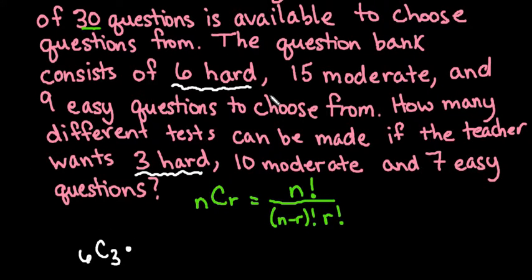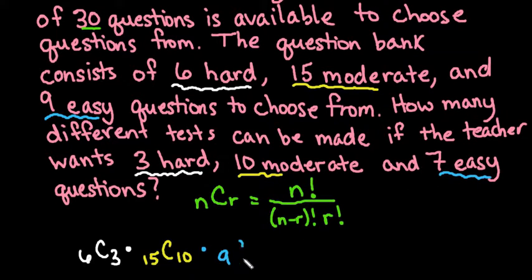And then we would multiply it by 15 things taken 10 at a time. And then the last one is we would have 9 easy that we want to choose 7 of. Okay, so we would have 9 things taken 7 at a time.